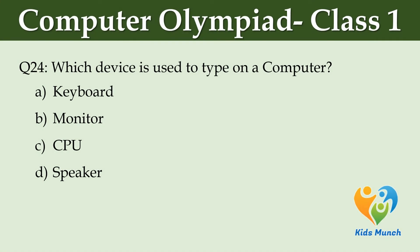Which device is used to type on a computer? Option A: Keyboard. Option B: Monitor. Option C: CPU. Option D: Speaker.